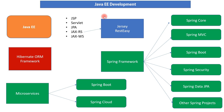Now let's move to Java EE development. The technologies to learn include JSP, Servlets, JPA, JAX-RS, and JAX-WS. JSP and Servlets are used to develop web applications. JPA is a standard Java Persistence API used to connect to databases and perform operations. There are JPA implementations like Hibernate and EclipseLink. JAX-RS is a standard API for developing REST APIs, with Jersey and RESTEasy as popular frameworks implementing it. JAX-WS is used for developing SOAP web services.